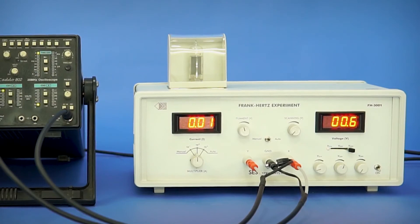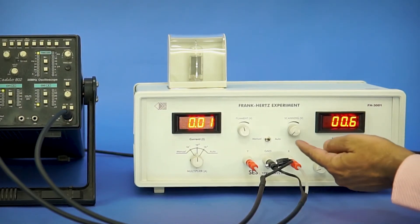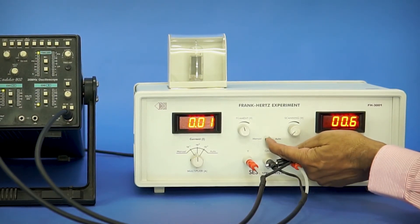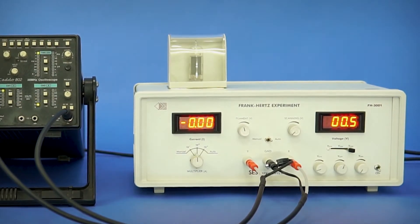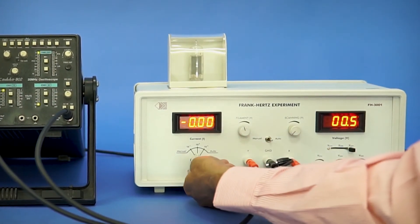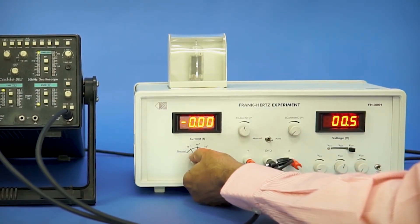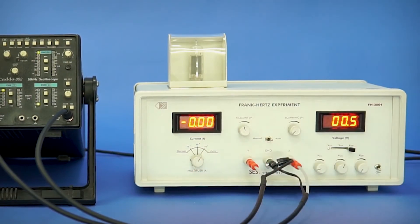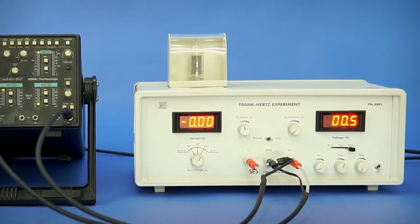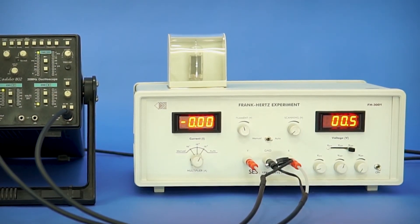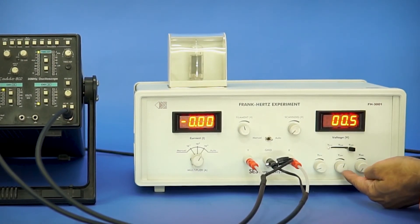Switch the manual/auto slider switch in auto mode. Now switch the current multiplier switch at 10 to the power minus 9 A range. This is to set the instrument in auto mode. Do not disturb the biasing voltage.